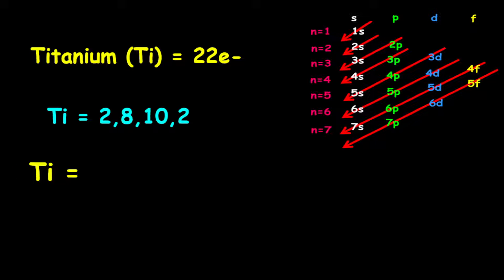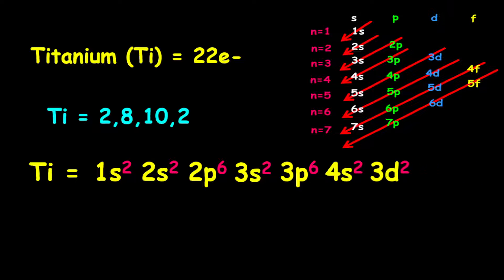Now for the orbital filling electron configuration, it is given as 1s2, followed by 2s2. Then we have 2p6, followed by 3s2. Then we have 3p6, followed by 4s2. And finally, we have 3d2.